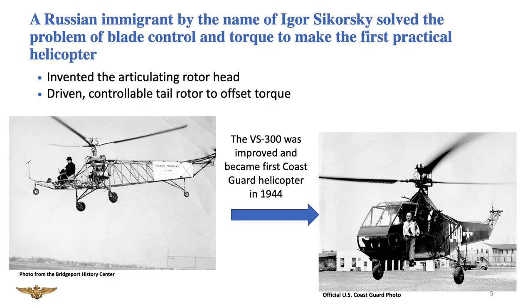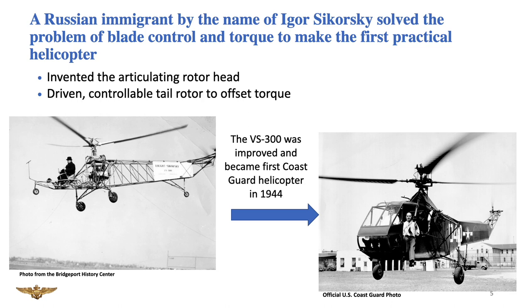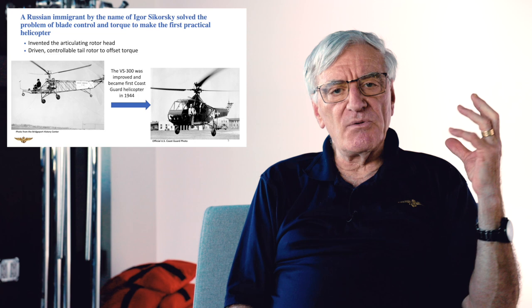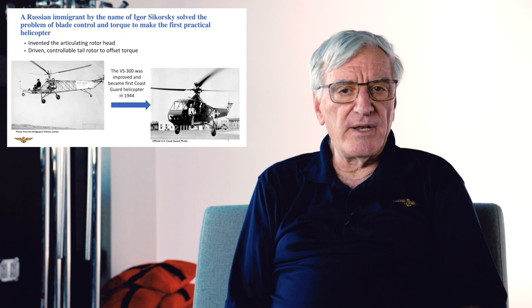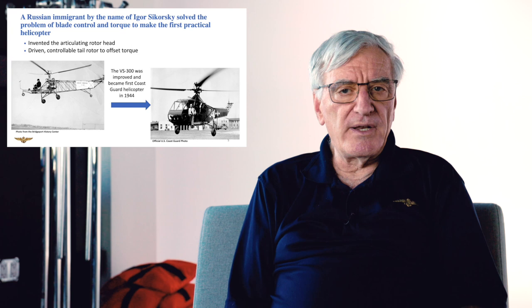What you see in this picture is the first helicopter with an articulating rotor head, what that means is the blades lead and lag, they twist and turn, and you can control them with the controls in a helicopter. He also came up with the idea of putting a tail rotor on to counteract torque. The first helicopter was the VS-300. It was built in 1943, the first ones were deployed in 1944, and the U.S. Coast Guard actually made the first rescue in Long Island Sound with one of the prototypes.